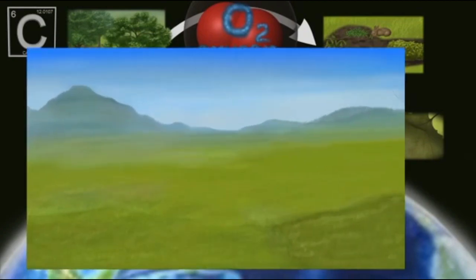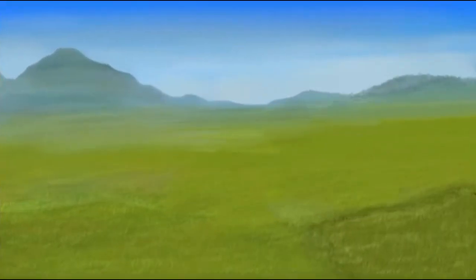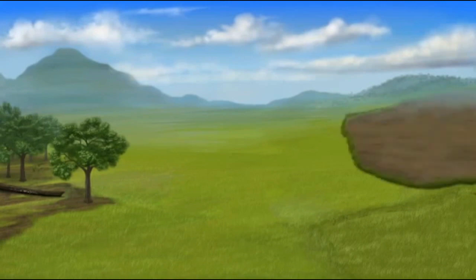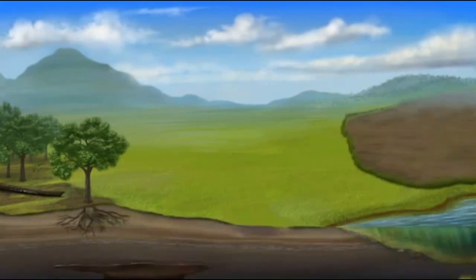The global carbon cycle describes the exchanges of carbon between the atmosphere, terrestrial vegetation, soils and organic matter, ocean, and fossil fuels. These exchanges are continually changing and not in perfect balance.